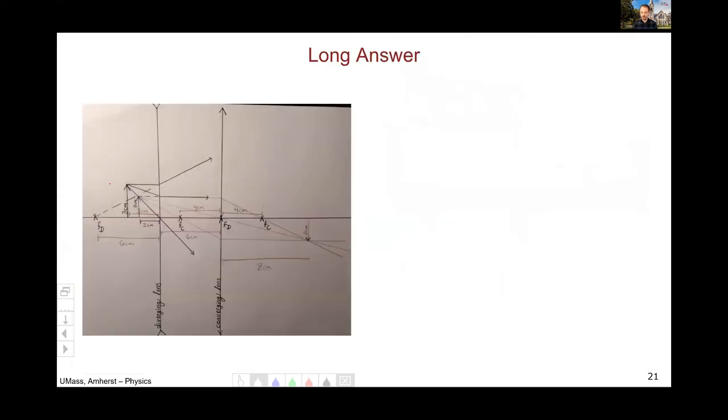Now, for our long answer, here is the final ray diagram. So you have, for the first part, the rays for our diverging lens. One comes in parallel and then leaves as if it had come from this diverging focal point. One comes in aiming for the other diverging focal point and goes out parallel. The third goes straight through the center here. And when you trace all those back, the result is an image that is virtual erect and has a magnification less than one because it's smaller than the original object.